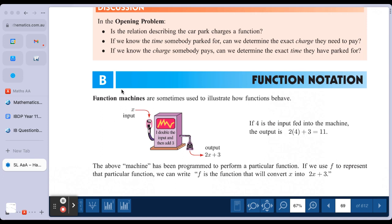It's a nice little visual here in that the rule that links the input, the x, to the output, the y, the rule can be sort of seen as a machine which changes the input to an output. So the input is x and says I double the input and then add 3 and then the output is 2x plus 3, double the input and then add 3.